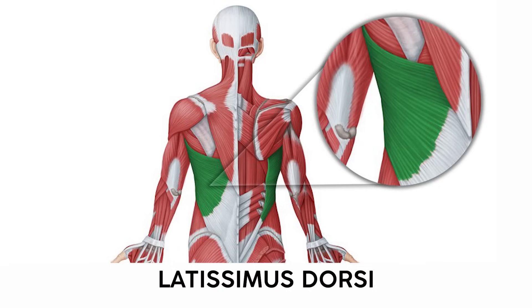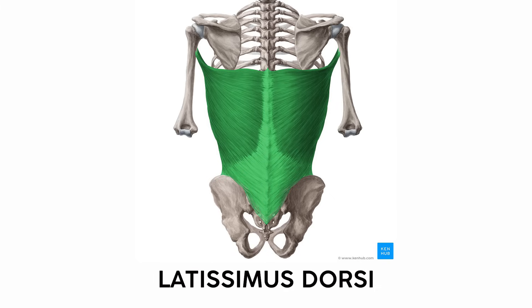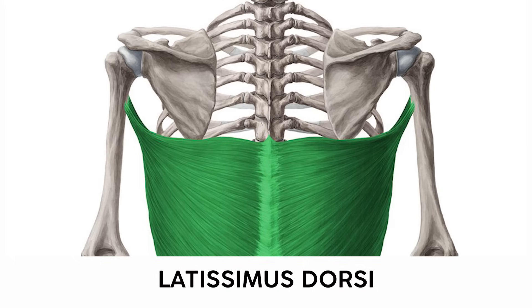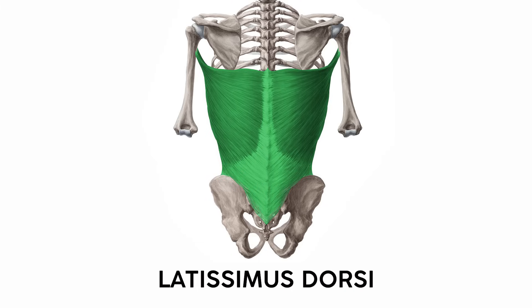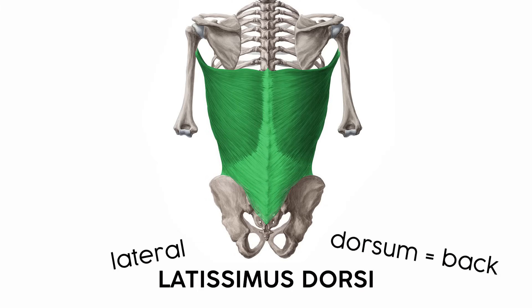The other big superficial muscle is the latissimus dorsi, often just referred to as the lats. It's the widest muscle in the body, spanning from shoulder to shoulder and from the thoracic vertebrae down to the bottom of the sacrum, and all of those fibers meet up to insert on the humerus. You can use the Latin naming conventions: latissimus refers to how lateral these muscles are, and dorsi refers to its location on the back, just like the dorsal fin of a dolphin.